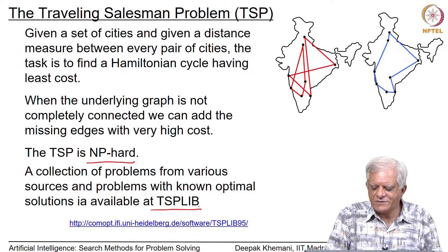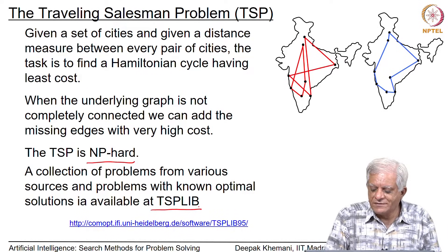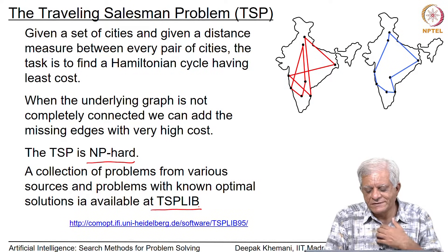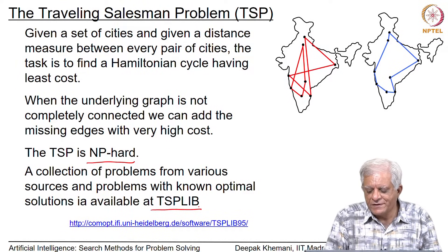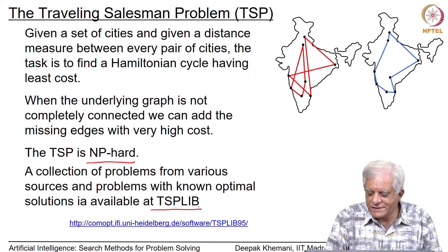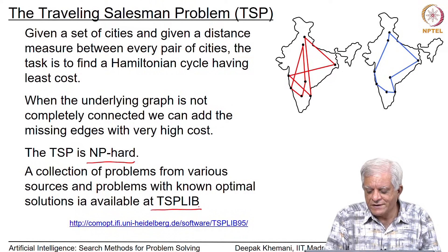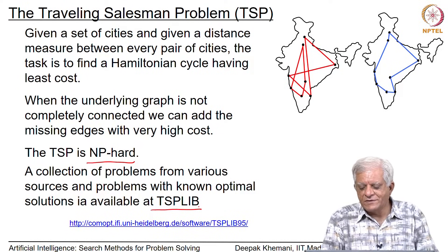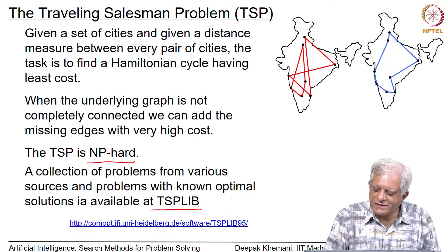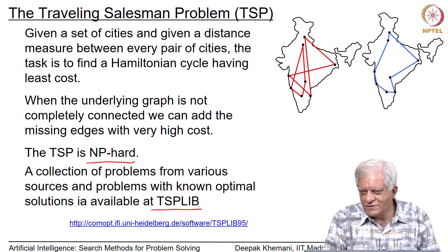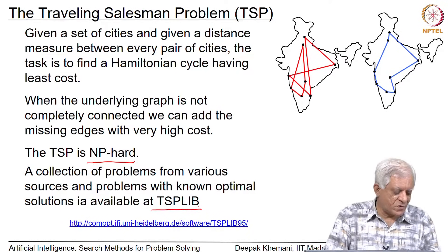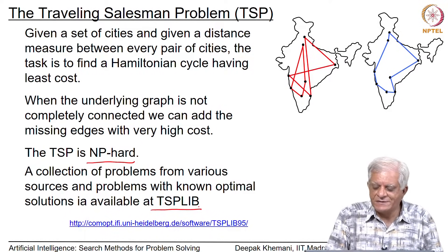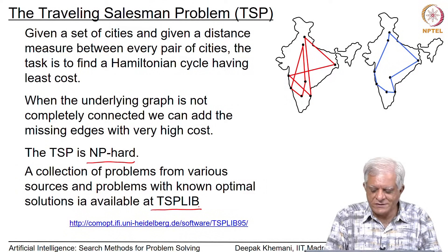The figure on the right-hand side shows some cities in India that a travelling salesperson would have to visit — Chennai, Bangalore, Goa, Hyderabad, Bombay, Kolkata, Delhi, and Chandigarh. The tour shown in red does not look like a very efficient or optimal tour, whereas the tour shown in blue looks like it might be the least cost or close to the least cost tour. The task is to find such tours — even if we cannot find the optimal tour, we would be happy to find as low-cost tours as possible.